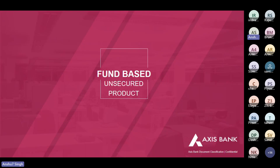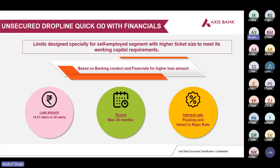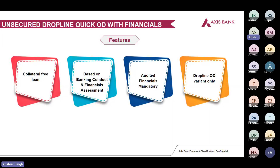Moving on to fund-based unsecured products — we have unsecured dropline quick OD. These are small ticket size loans to meet the working capital requirements of the self-employed segment. Assessment is based on banking conduct; financials are taken only for higher ticket sizes (30 to 50 lakhs). Loan amount is 15 to 50 lakhs — from 15 to 30 lakhs no financials required; from 30 to 50 lakhs financials are also required. Tenure is 36 months, interest rate is floating and linked to repo rate. Collateral-free; audited financials are mandatory for higher ticket size; only drop line variant is available.